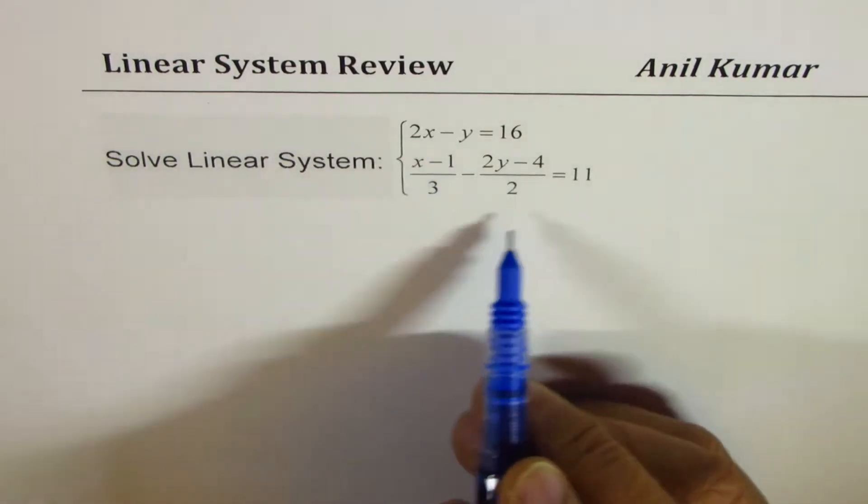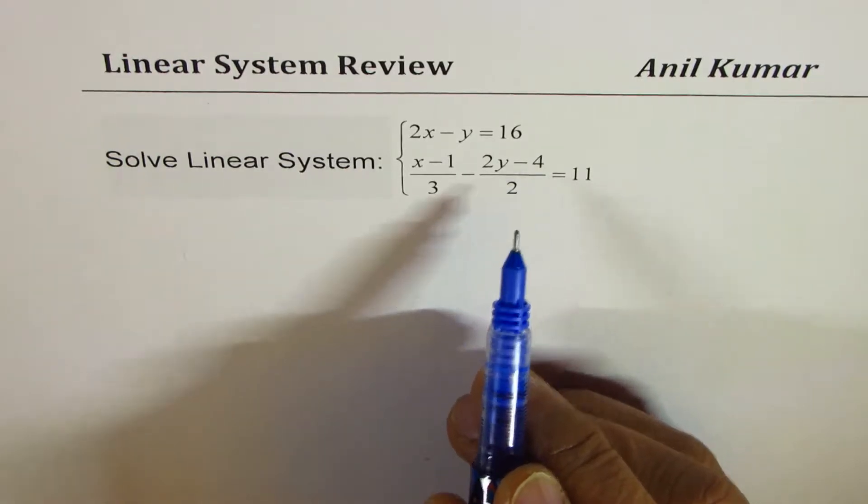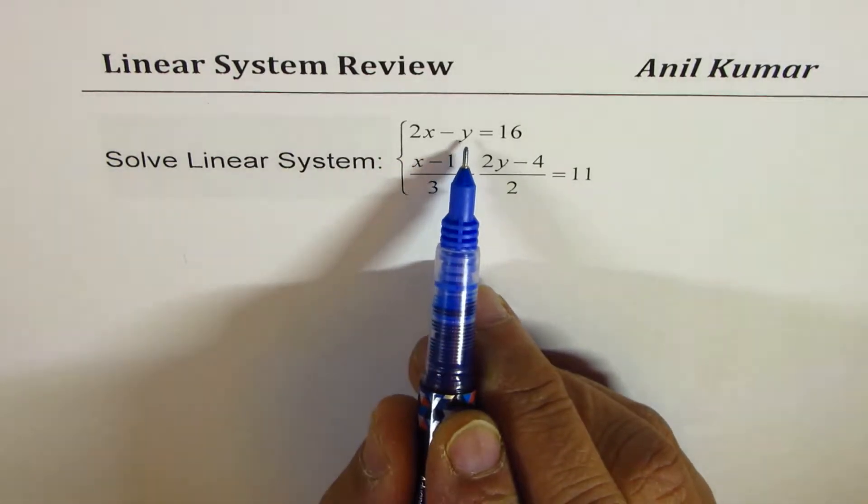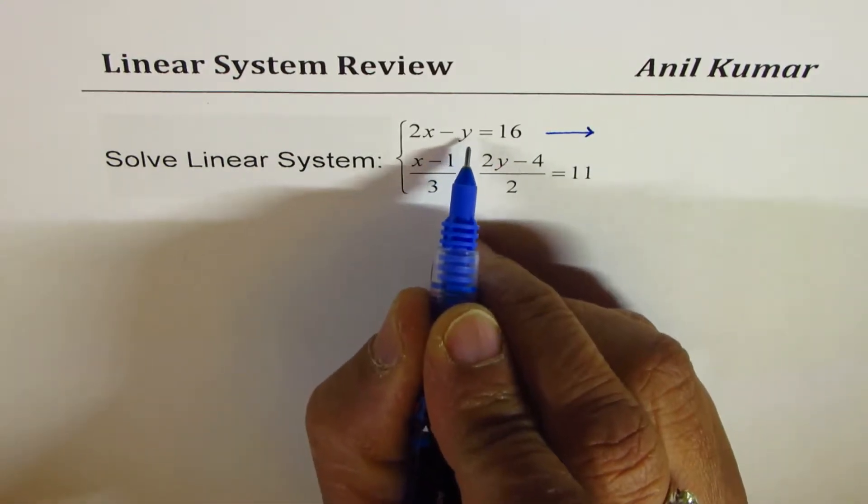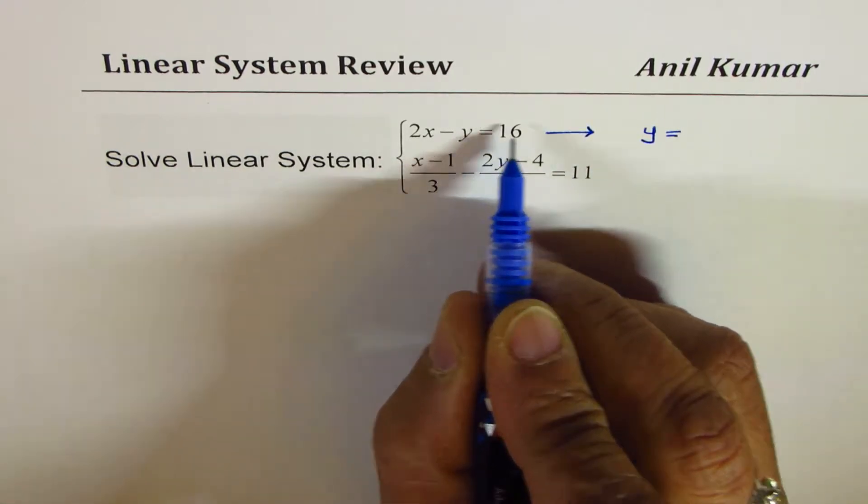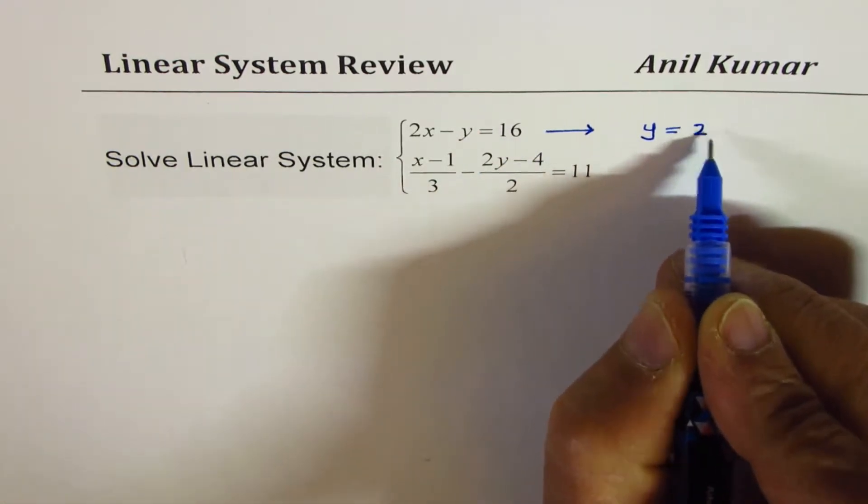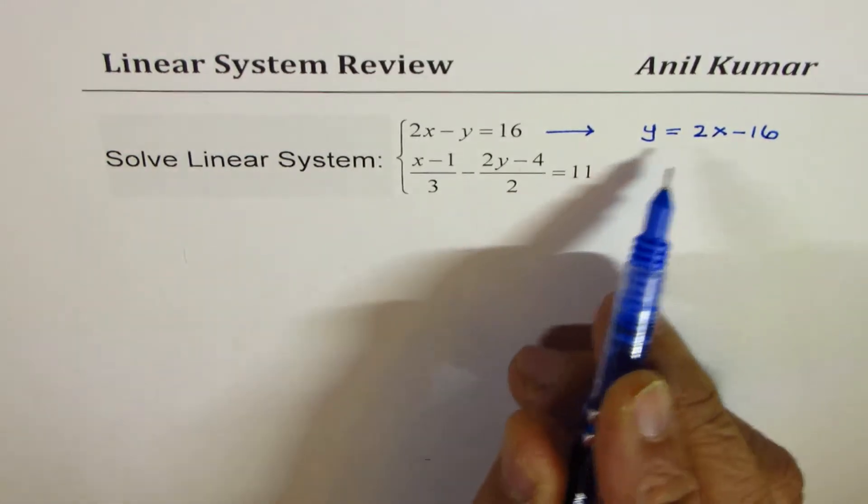When you have such equations you could solve by substitution or elimination. Here you can isolate y, so from this equation I will write y as equal to, bringing y to the right side gives me 2x minus 16. That is one thing.